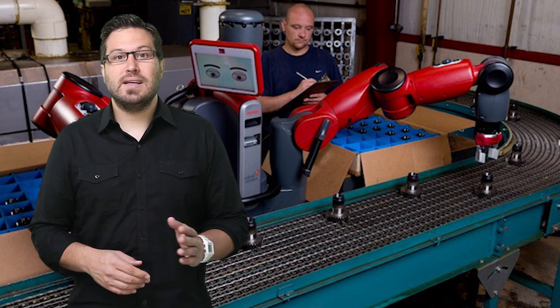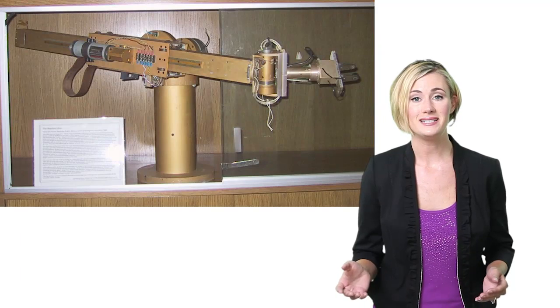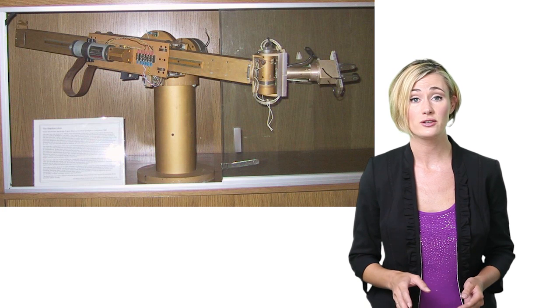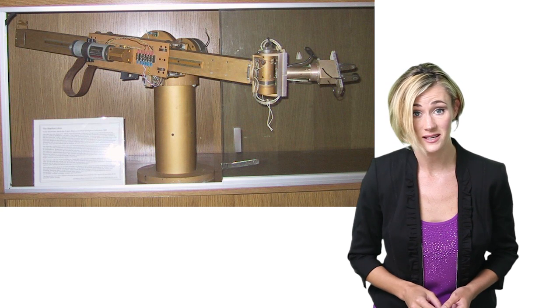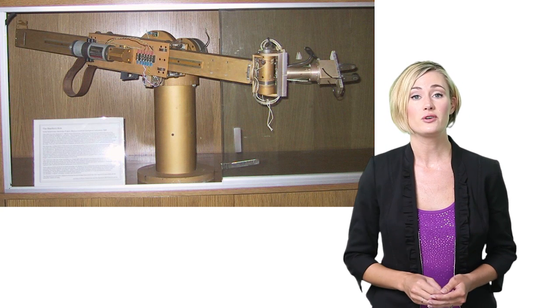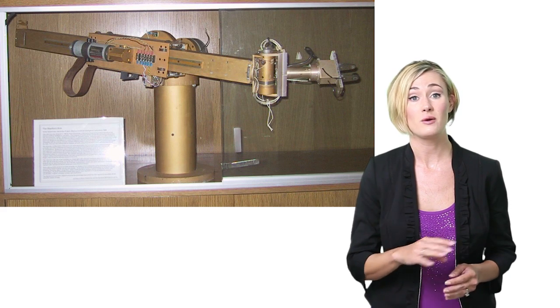One of these robots is named Baxter. Back in the 1970s, when industrial robots were taking over in factories across the globe, you could be pretty sure of a few things. One, the robots would be expensive. Two, they'd be difficult to program. And three, they were dangerous.